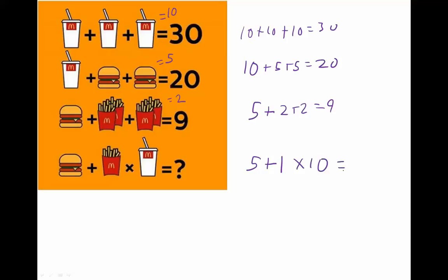And then here's the second mistake. We've got to remember our order of operations here. We always multiply before we add. So this is 1 times 10 first, making 10. So this is 5 plus 10, and therefore the answer is 15.